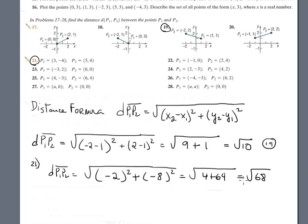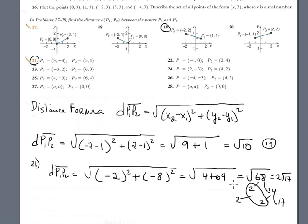Let's see if simplification is possible. Dividing 68 by 2: 34 divided by 2 is 17. That factor of 2 comes outside the radical, giving us 2 times radical 17. This is the answer for problem 21.